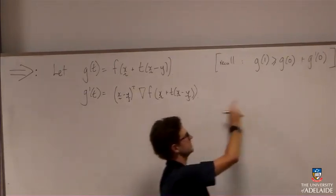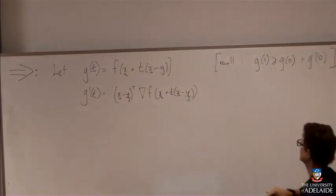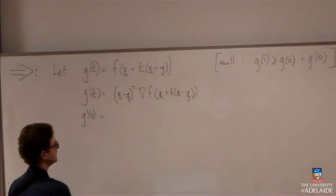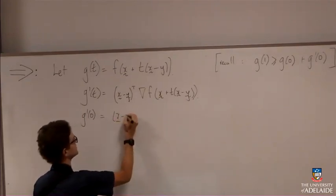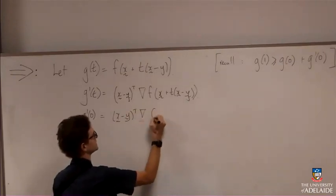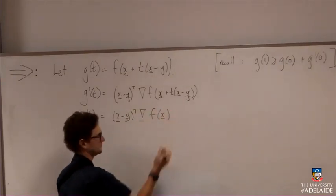Now, what do I need? Why did I differentiate this? Well, to plug into my lemma here, I'm going to need g prime of zero. So plug in t equals zero, and I'll get x minus y transpose gradient f of x is that.